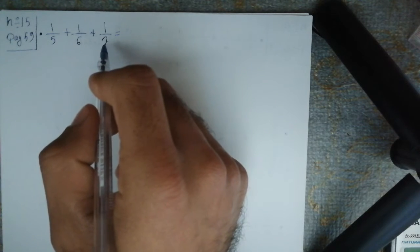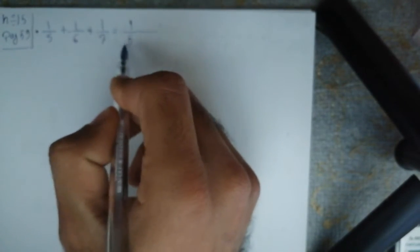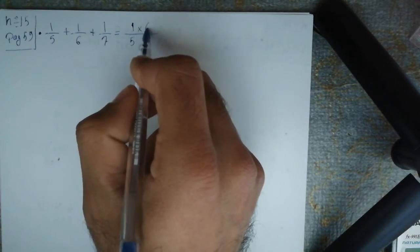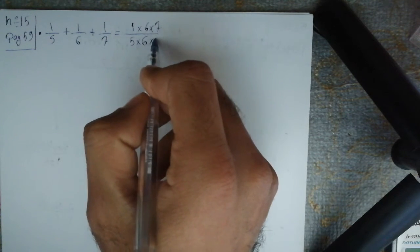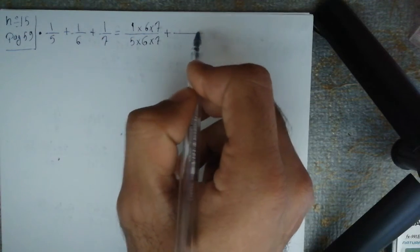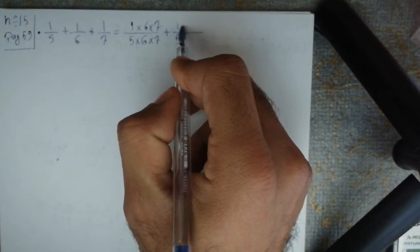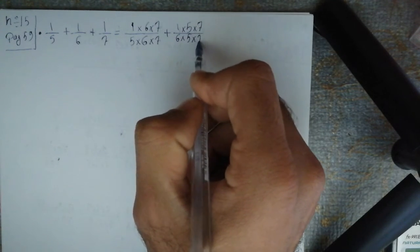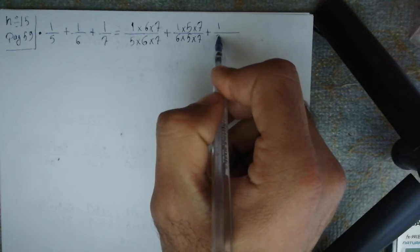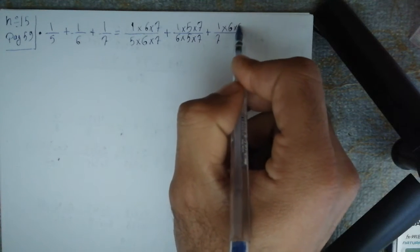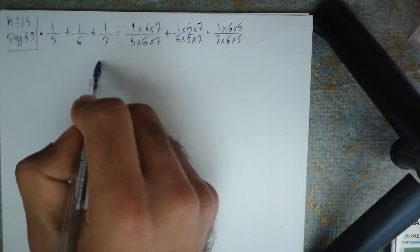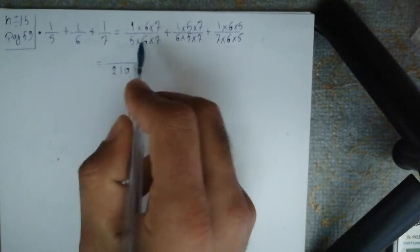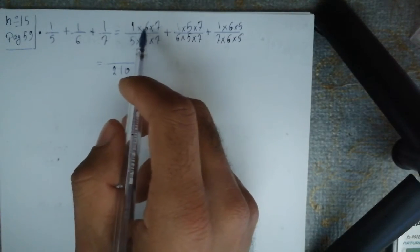We transform to the same denominator — reduction to the same denominator. For 1 over 5, we multiply the numerator and denominator by 6 and by 7. For 1 over 6, we multiply its components by 5 and by 7. For the third fraction, we multiply its components by 6 and by 5. We obtain the same denominator: 5 times 6 times 7 equal to 210. The numerator of the first fraction is 1 times 6 times 7 equal to 42.